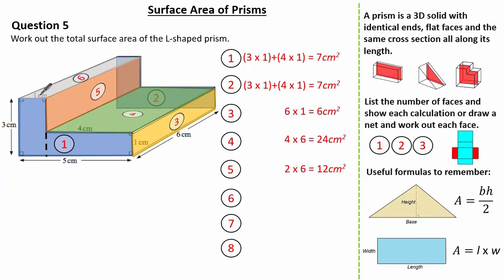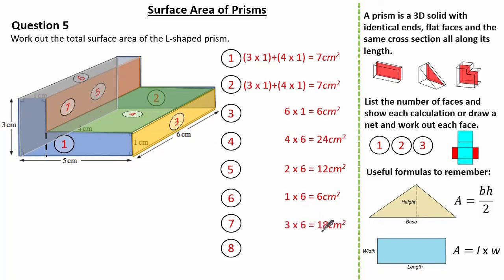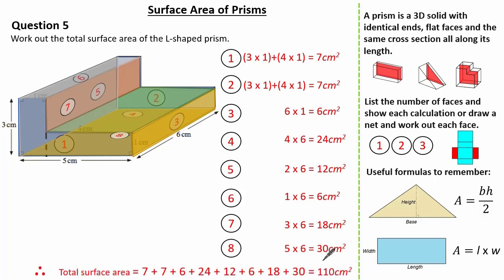Face 6 is a 1 by 6 cm rectangle giving 6 cm². Face 7 at the back is a 3 by 6 giving 18 cm². Face 8 on the bottom is a 5 by 6 giving 30 cm². Therefore the total surface area is the sum of all these faces, giving 110 cm².